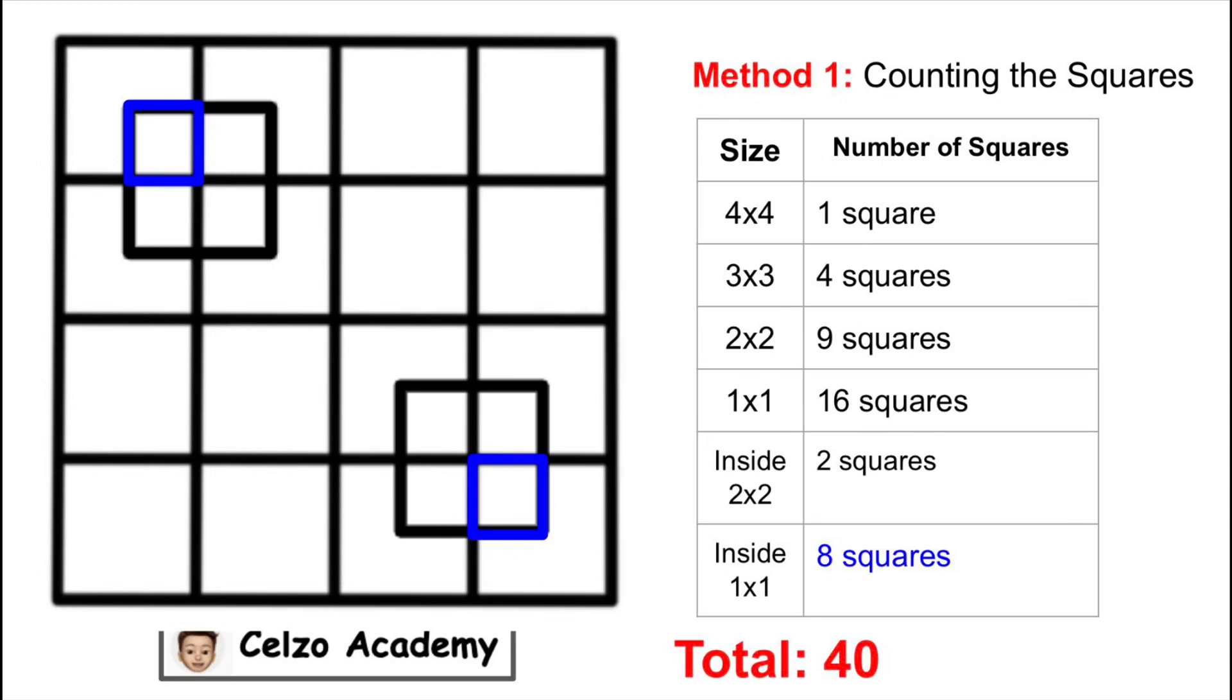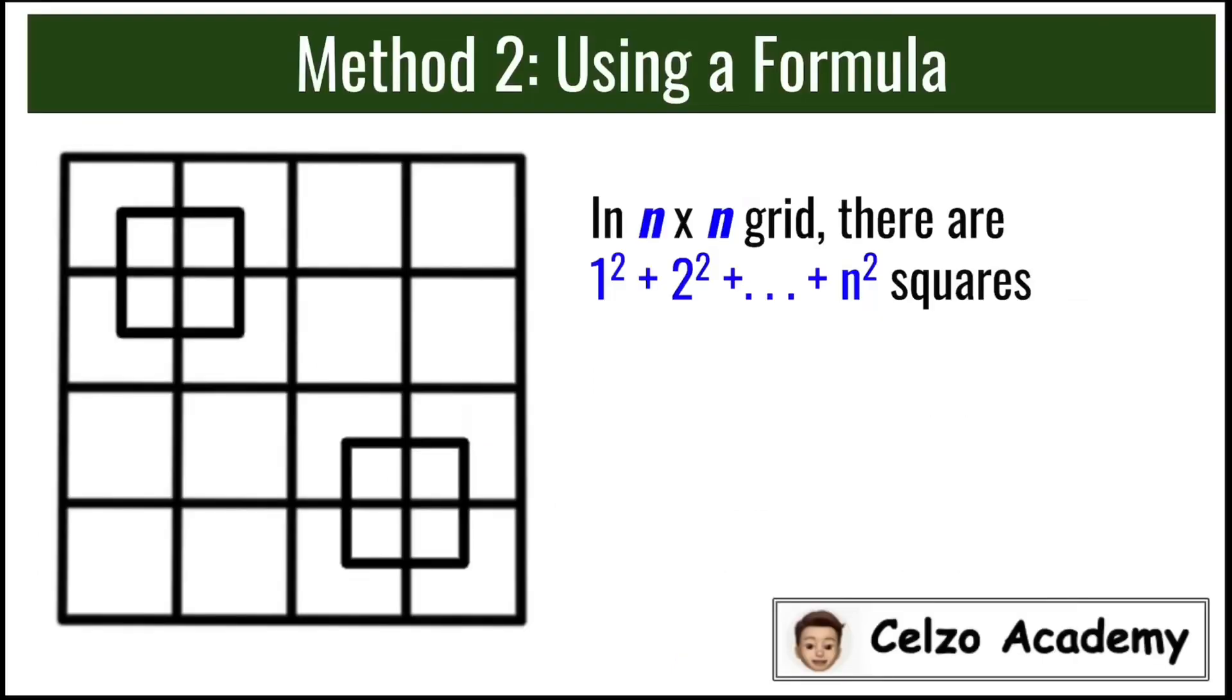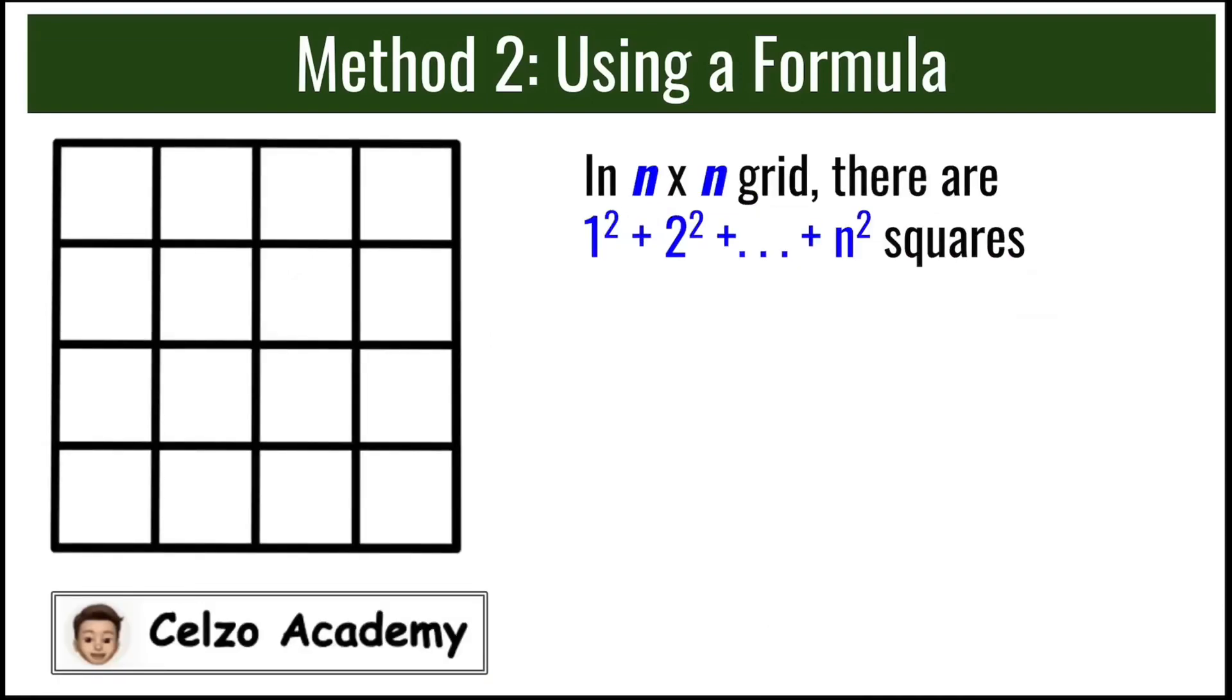So that's the counting method. Now I will show you how to derive the formula to answer this question. If there are n by n grid, there are 1² + 2² + ... + n² squares.